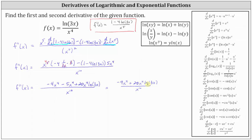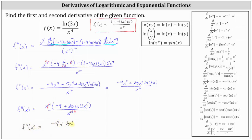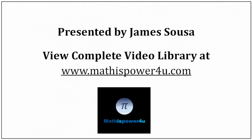Now we'll factor out x to the fourth from the numerator to simplify further. The second derivative function equals x to the fourth times the quantity negative nine plus twenty natural log three x, all divided by x to the tenth. There are four factors of x in common: x to the fourth simplifies to one and x to the tenth simplifies to x to the sixth. So the second derivative function is equal to the quantity negative nine plus twenty natural log three x, all divided by x to the sixth. We have the first derivative above and here we have the second derivative. I hope you found this helpful.